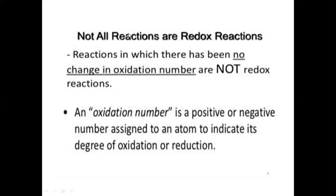Not all reactions are redox reactions. As discussed in the morning class, in the example of magnesium and sulfur, magnesium loses its two electrons and donates them to the sulfur atom. Magnesium is assigned a plus two sign after donating its two electrons, and sulfur achieves a minus two sign after gaining those two electrons from magnesium. These plus two and minus two values are the oxidation numbers of those two elements.